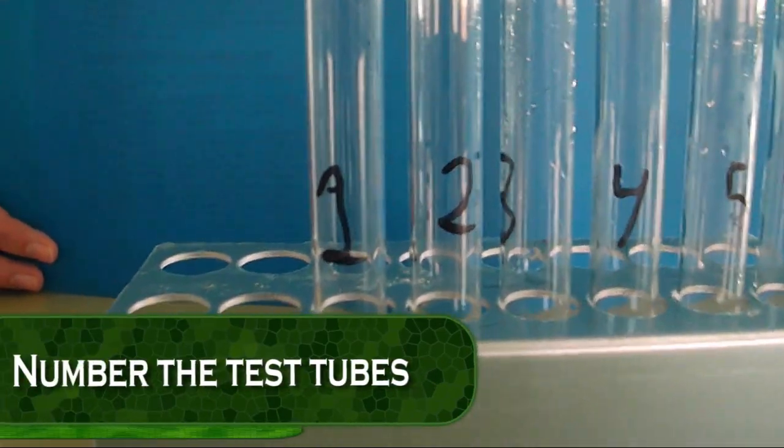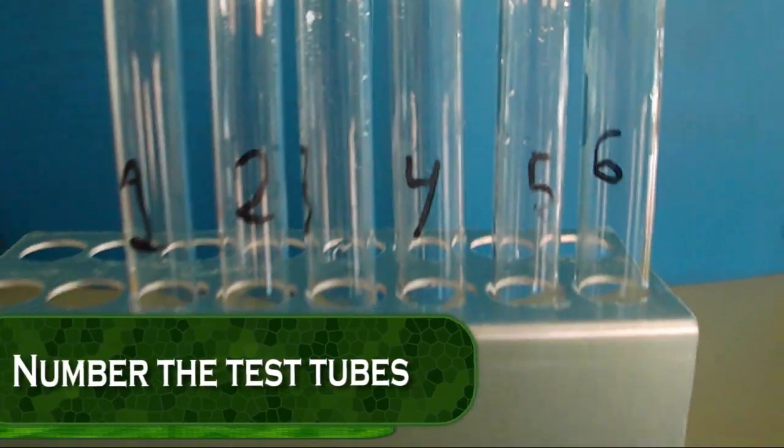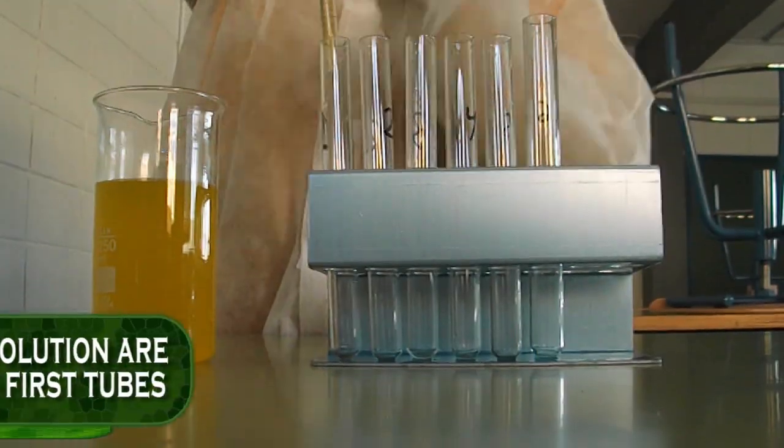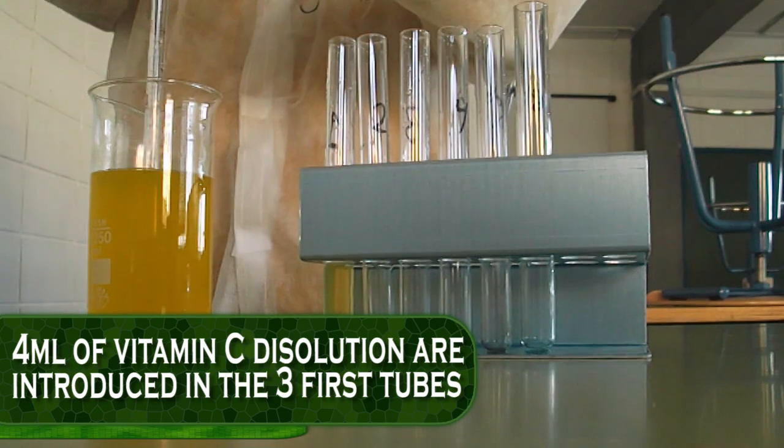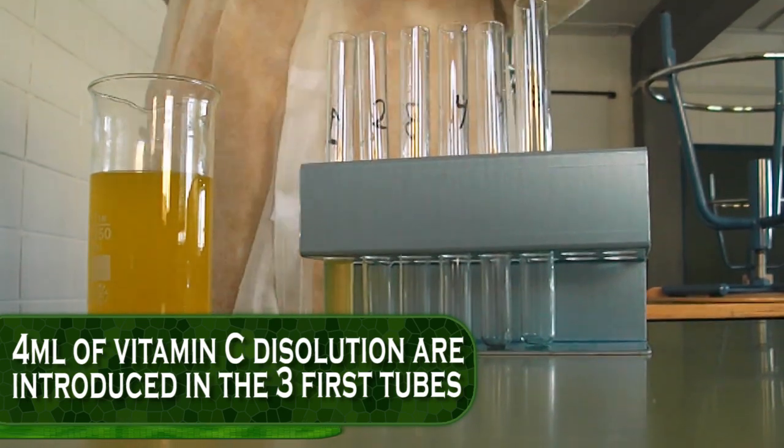First of all, the six tubes are numbered with the marker. 4 ml of vitamin C dissolution are introduced in the three first tubes.